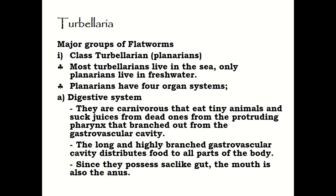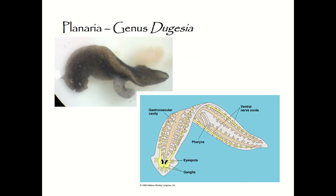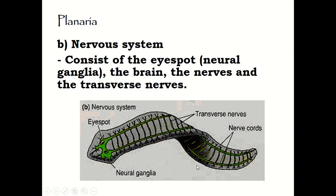Turbellaria live in the sea; only some live in freshwater. They have four organ systems. First, the digestive system: they are carnivores that eat animals and suck juice from dead animals through a protruding pharynx that branches out from the gastrovascular cavity. They have a long, highly branched gastrovascular cavity to distribute food to all parts of the body. Since they possess a sac-like gut, the mouth also serves as the anus.